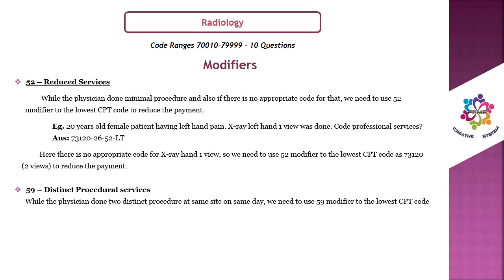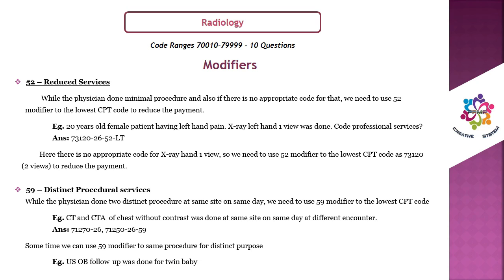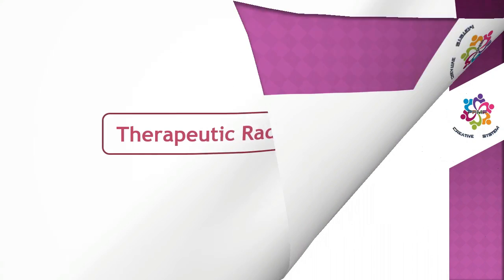Number 4: Modifier 59 for distinct procedural services. When the physician performs two distinct procedures at the same site on the same day, use modifier 59 on the lowest CPT code. Scenario: CT and CT of chest without contrast done at same site on same day at different encounters — answer is 71270 with 26, and 71250 with 26 and 59. Modifier 59 can also apply to the same procedure for a distinct purpose — for example, ultrasound OB follow-up for twin babies: 76816 for the first baby, 76816 with 59 for the second baby.